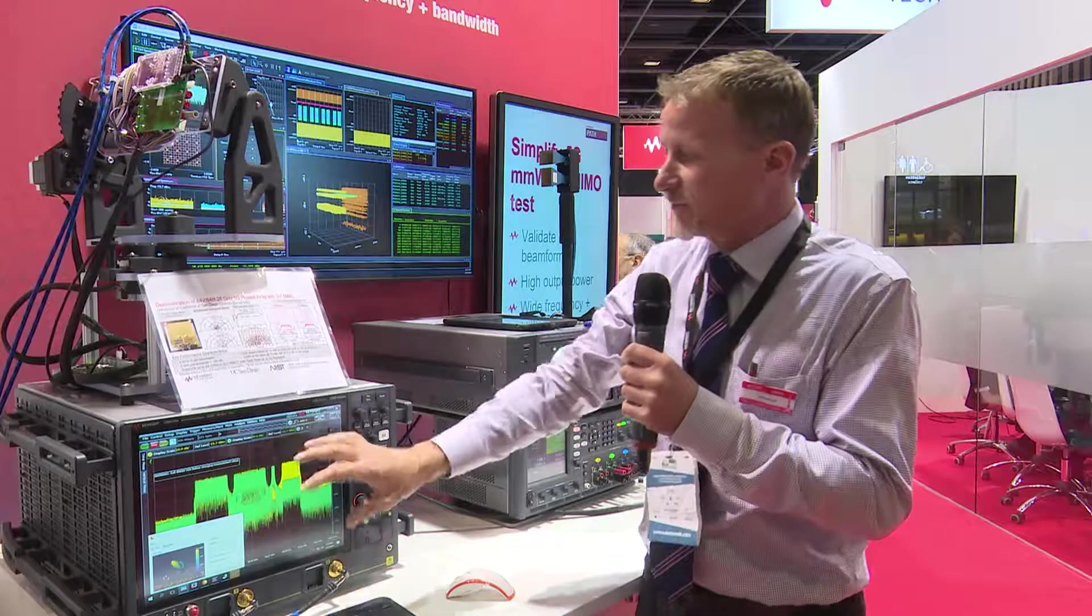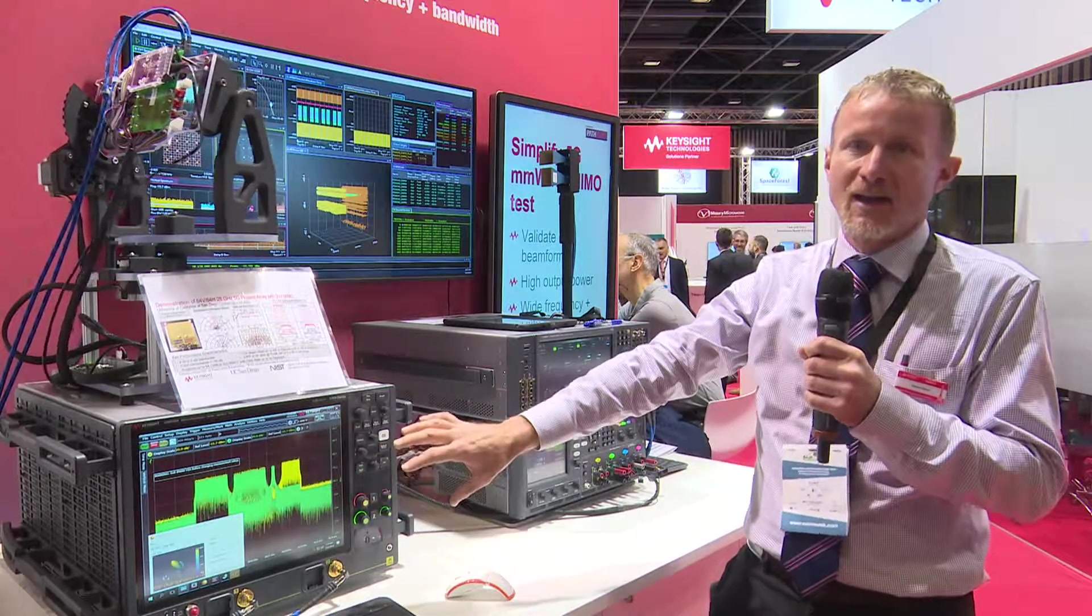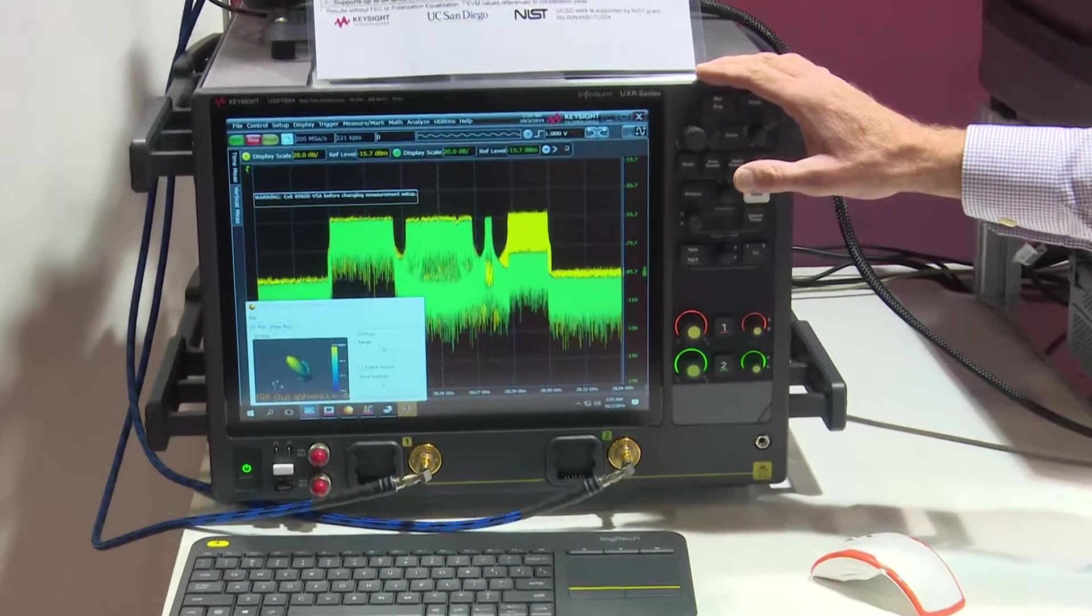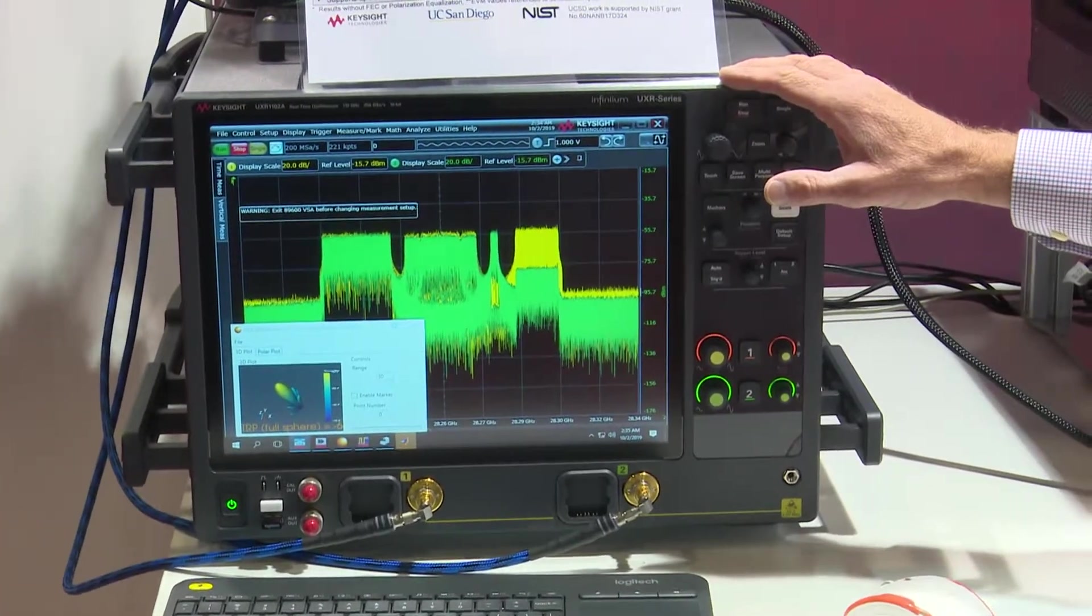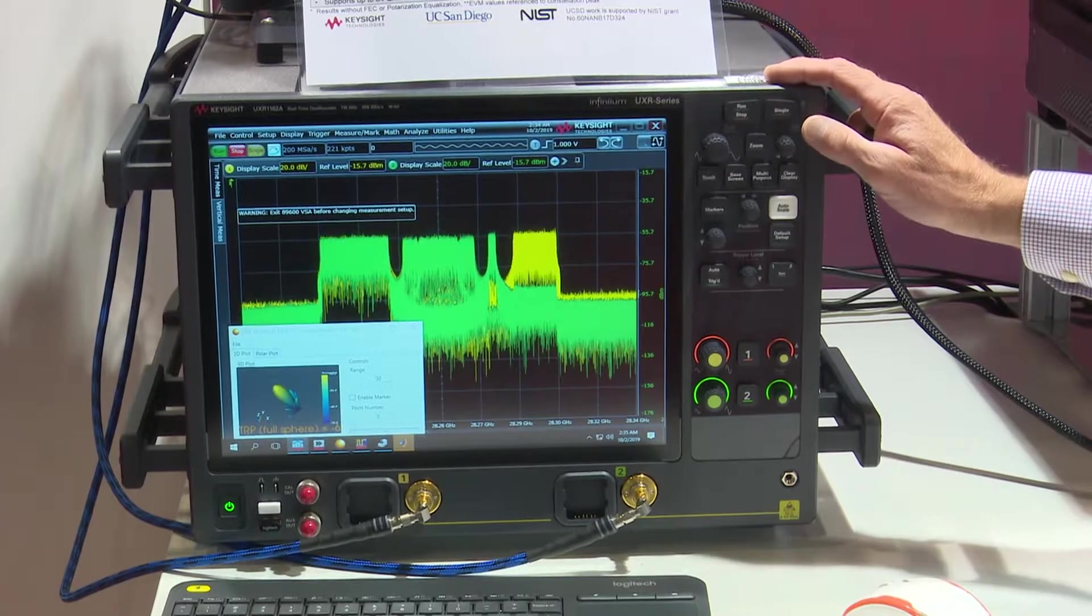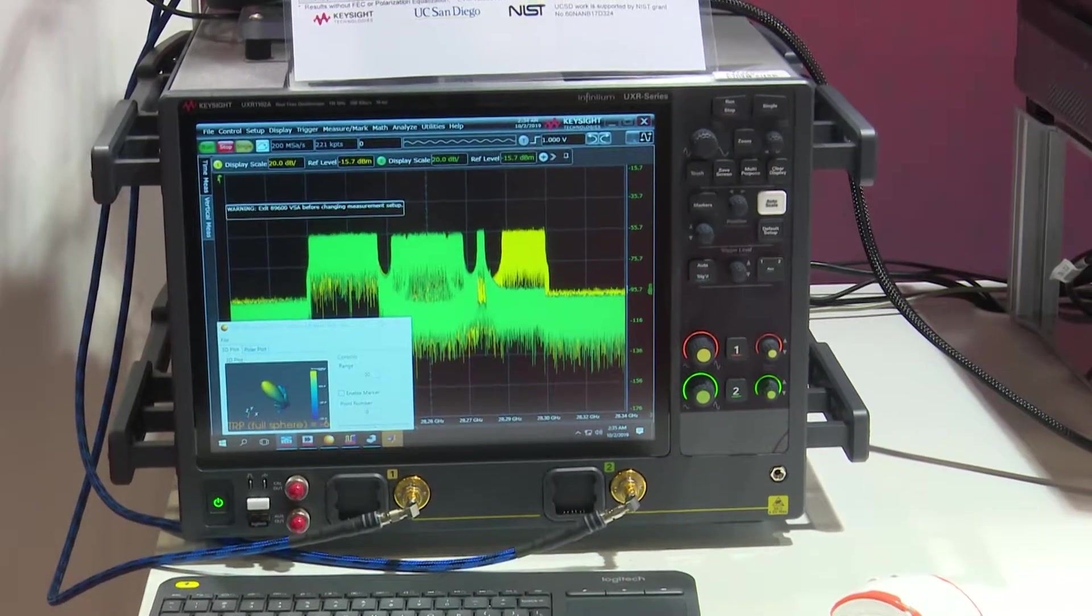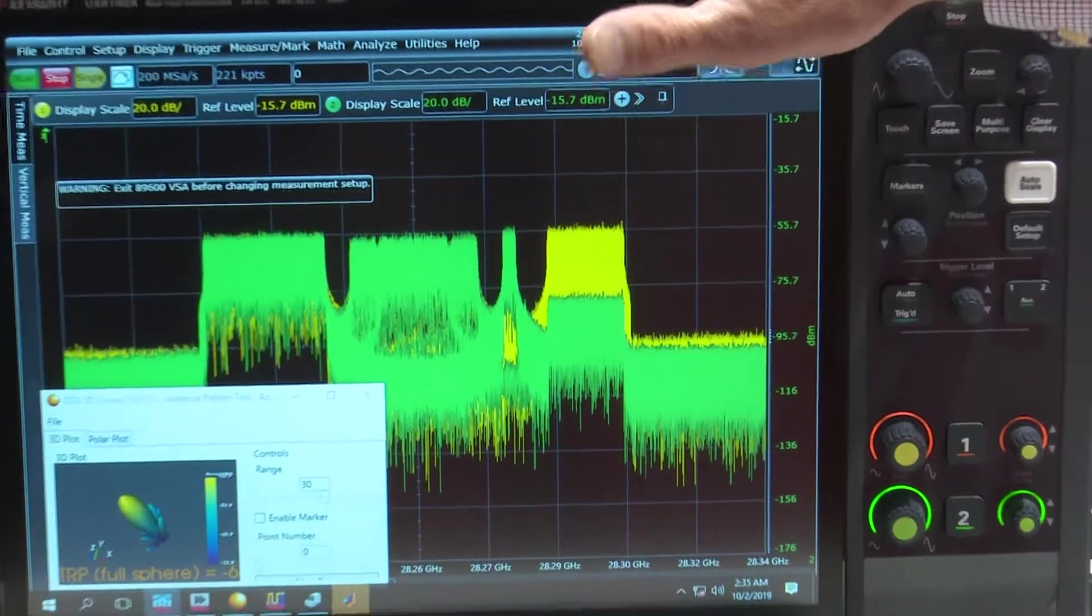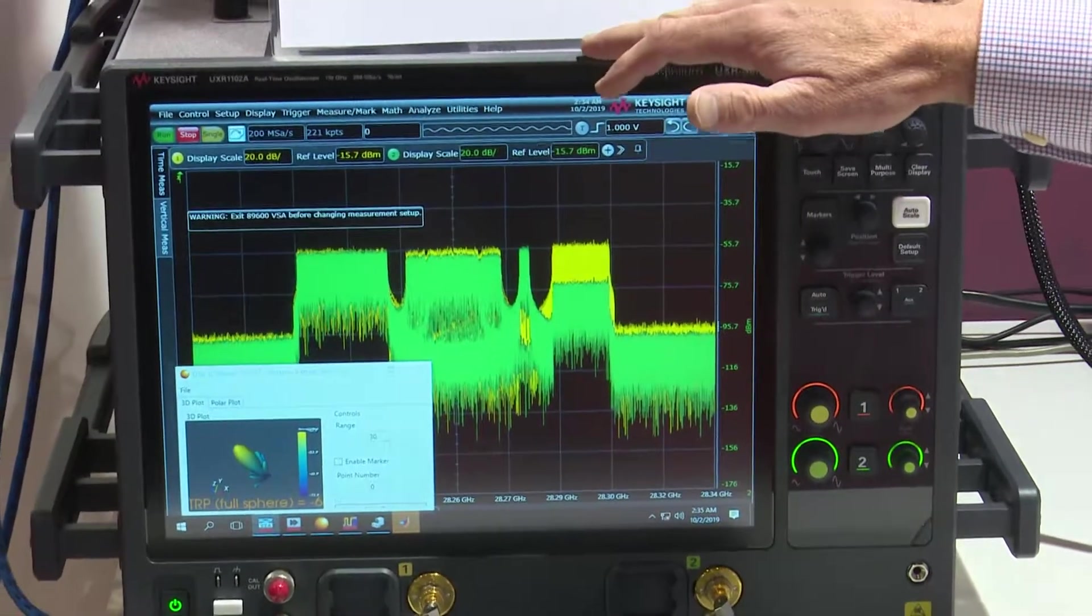The output of this then is fed into our newest oscilloscope, the UXR, and normally you might think of this as a fantastic time domain machine, but because this has a sample rate of 256 giga samples per second coupled with the 10 bits of vertical resolution give us near spectrum analyzer like dynamic range for in-channel measurements.